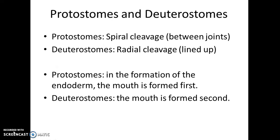Now we're getting into the coelomates. We talked about protostomes and deuterostomes: protostomes have spiral cleavage, which is between the joints. Deuterostomes have radial cleavage, meaning the cells are lined up, whereas in protostomes they're not. In protostomes, the mouth is formed first, and the formation of the mesoderm is from the ectoderm.